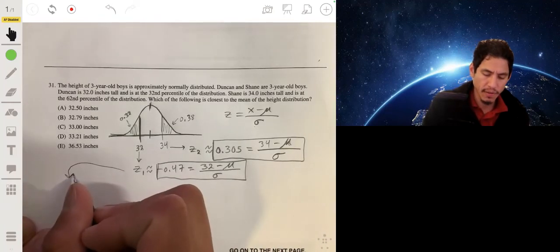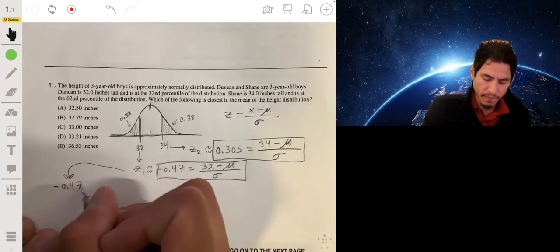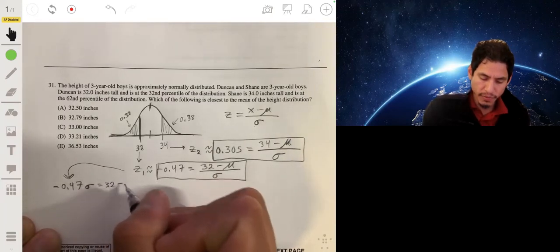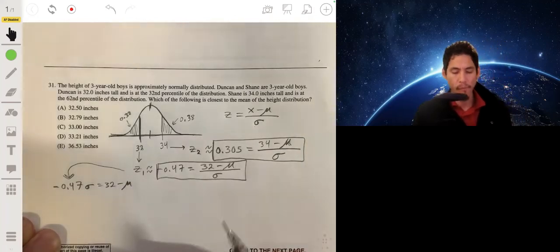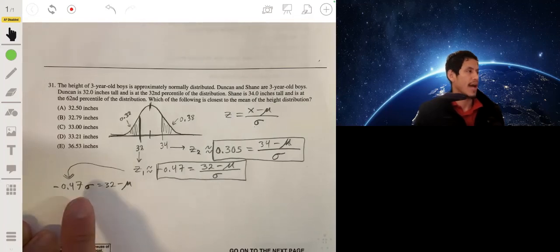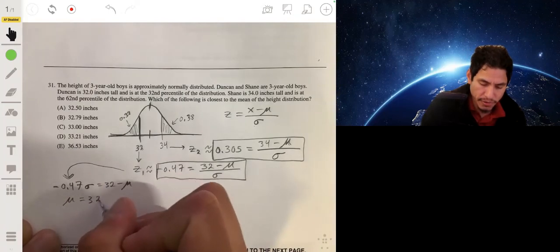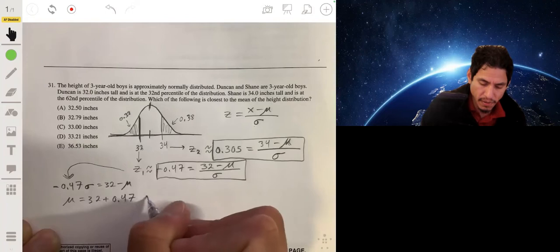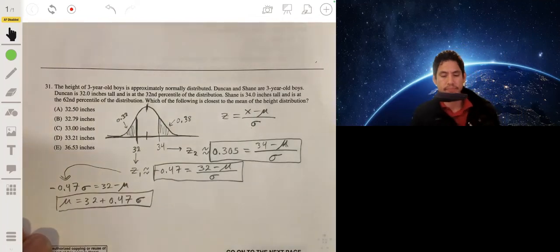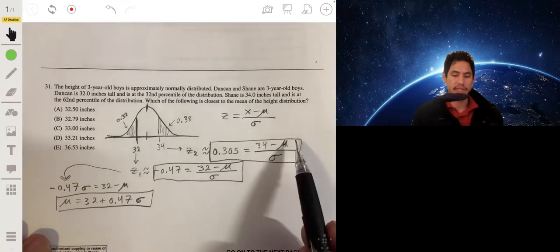So what you can do is solve one of the equations for one of the variables then plug it into the other one. So let's multiply this by sigma, and then we'll get negative 0.47 times sigma equals 32 minus mu. Then if we add mu to both sides and add 0.47 sigma, that means mu will be equal to 32 plus 0.47 sigma.